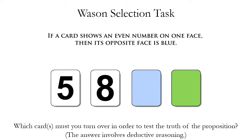In order to figure this out, you have to use some deductive reasoning. Let's go through each of the cards one by one, left to right, and figure out if we need to turn over that card to test the truth of this proposition. Let's start with the card that has a five on it. Do we need to turn this card over to see what's on the other side? The answer is no.